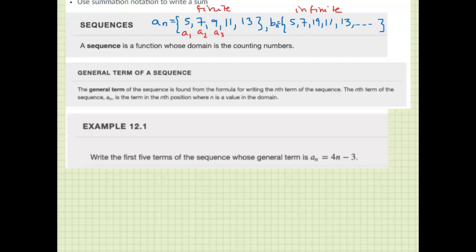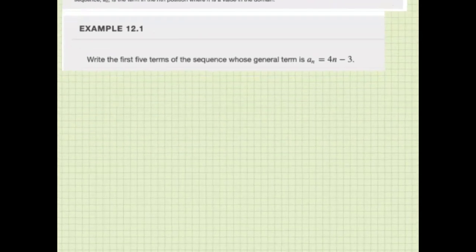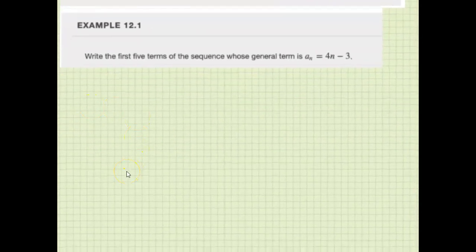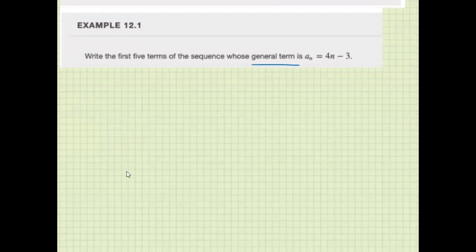The general term means the formula that gives you any term in the sequence. Let's look at Example 12.1. Here we are given the equation for the general term, and we want to list the first five terms.